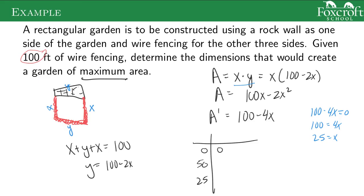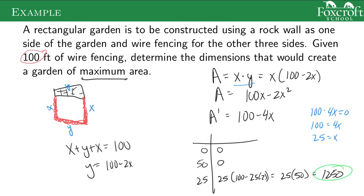If I plug in 0, I get 0. If I plug in 50, I get 0 — because it's basically just putting a fence in a straight line. If I plug in 25, I get 25 times (100 minus 2 times 25), which is 25 times 50, which is 1,250. So this is the maximum area. The problem asks for the dimensions: x equals 25 and that makes y equal 50. So a 25 by 50 rectangle gives the maximum area.